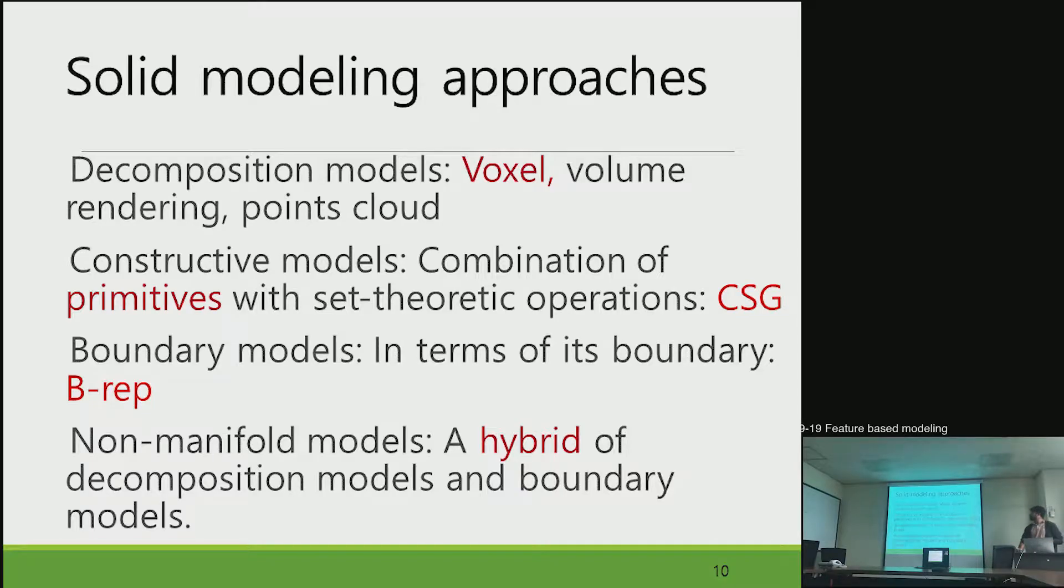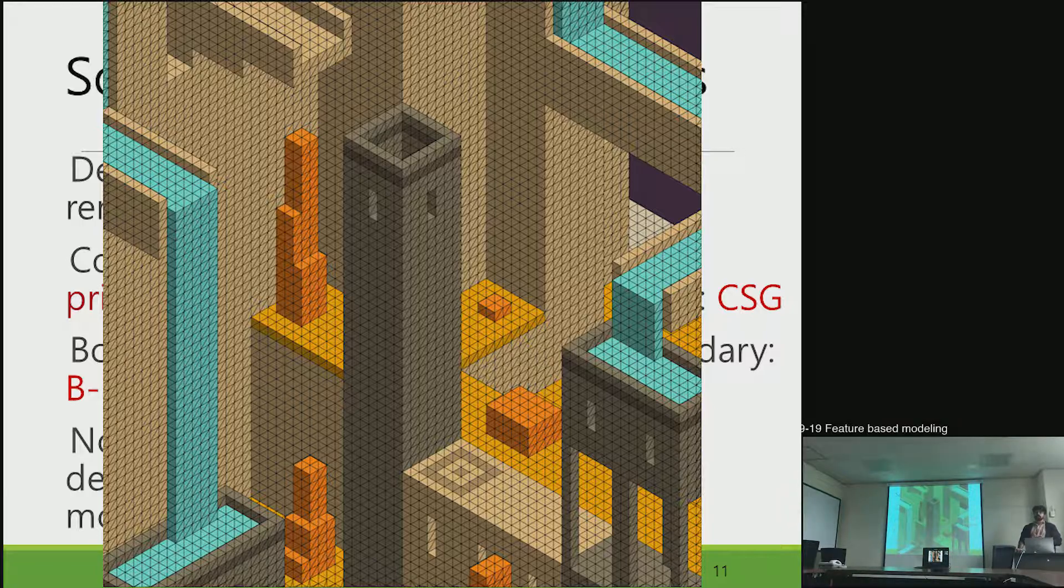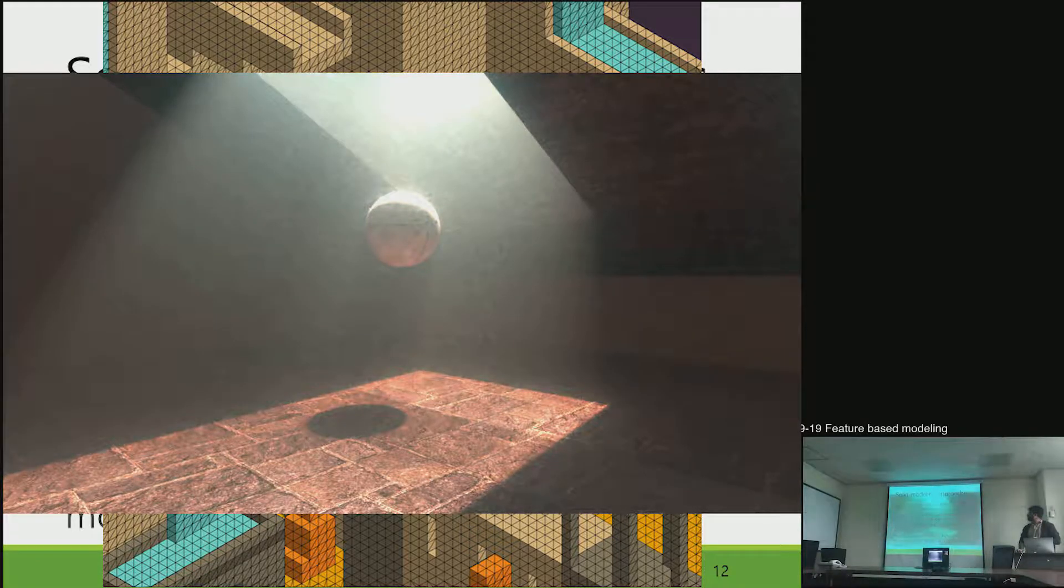In decomposition models there are voxels like this. In voxel rendering there are very very small triangles and this is a portion of an image, so voxel rendering is really computation intensive and does not produce very good results. And next is volume rendering.